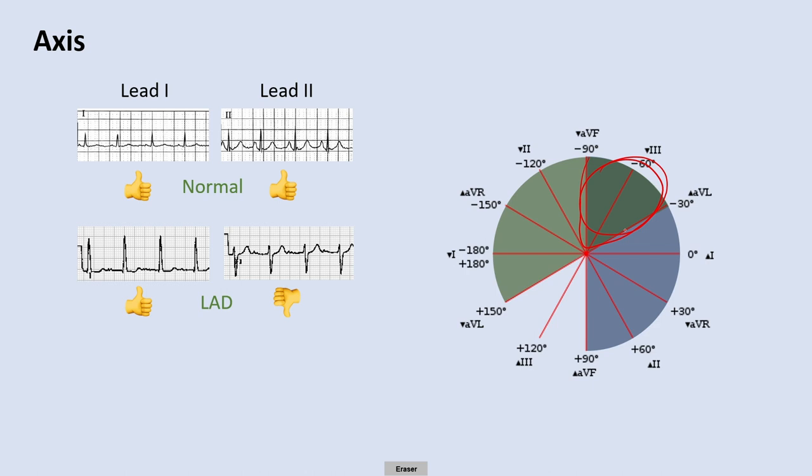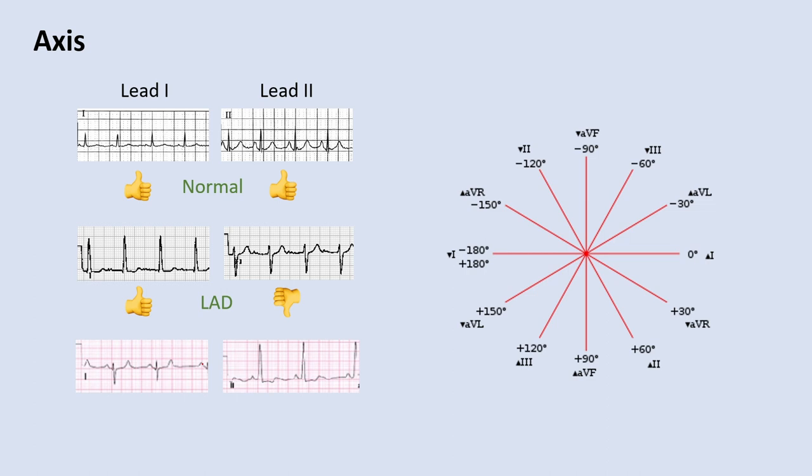Final example: a negative complex in lead 1 and a positive complex in lead 2. Thumbs down for lead 1, thumbs up for lead 2, and the right thumb is pointing up. So you have right axis deviation — a negative complex in lead 1 and a positive complex in lead 2 corresponds to the right axis deviation quadrant.